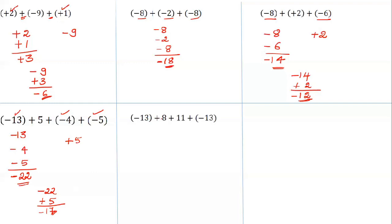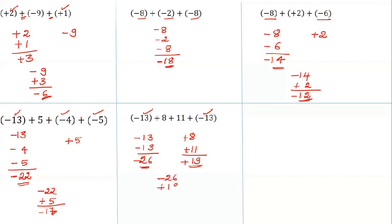Now: minus 13 plus 8 plus 11 plus minus 13. Group the numbers having the same sign: minus 13 and minus 13 have the same sign — add them: 26, giving minus 26. Then 8 and 11 have the same sign — add them: 19. Now add minus 26 and plus 19 — different signs, so subtract: that is 7. Answer: minus 7.